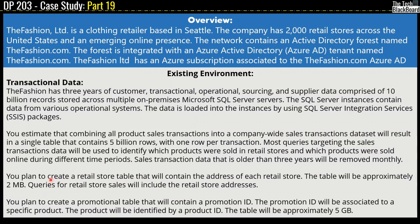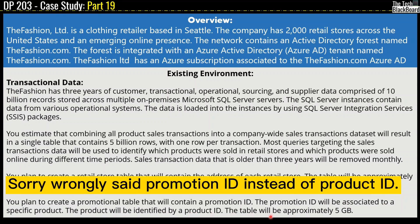The plan includes creating a retail store table containing the address of each retail store, approximately 2 MB in size. Queries for retail store sales will include retail store addresses. There is also a plan to create a promotional table containing a promotion ID associated to a specific product, identified by promotion ID, and this table will be approximately 5 GB.